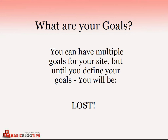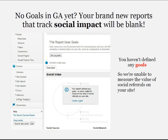First you have to think about what your goals are. You can have multiple goals for your site, but until you define your goals you will be lost. In order to take advantage of the new social impact tracking reports in Google Analytics, you must first set up your goals. Otherwise you will see a notice that tells you that you don't have any goals defined and you're unable to measure the value of social referrals on your site.